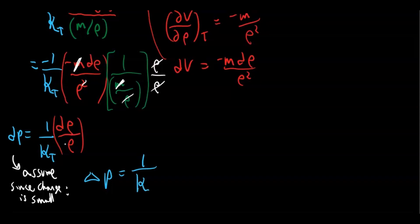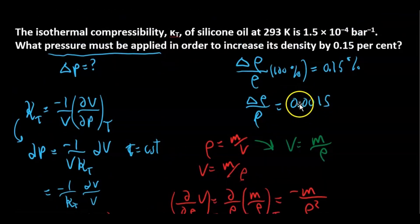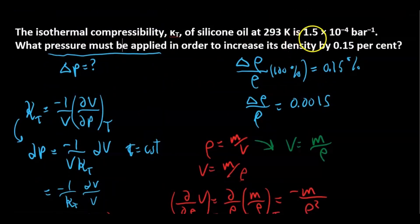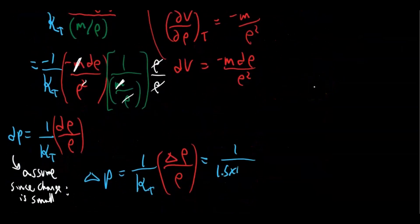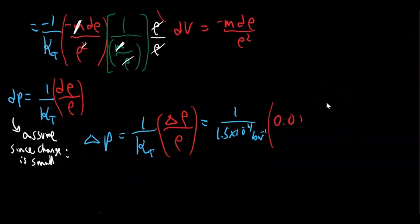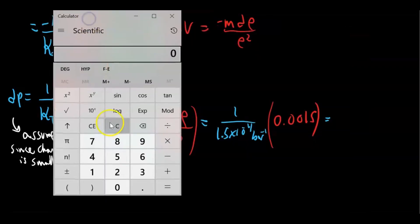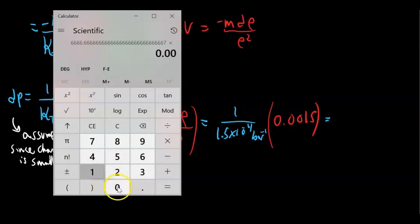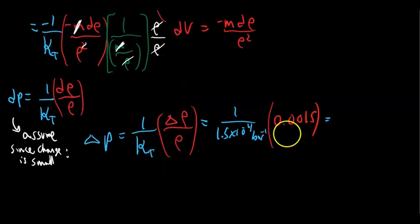Our delta-rho over rho is 0.0015. So delta-P equals 1 divided by 1.5 times 10 to the negative 4 per bar, times 0.0015, which gives 10 bar. That's a nice round number — 10 bar.